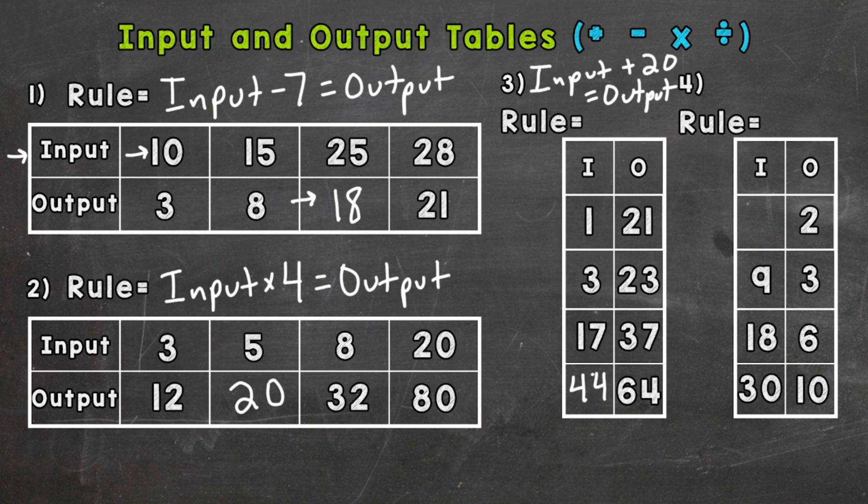And lastly, number 4: we are decreasing in value here, 9 to 3, 18 to 6, and 30 to 10. So it's either division or subtraction, and it looks like it's going to be division. How do we get 9 to equal 3? Well, we could divide by 3. 18 divided by 3 is 6, and 30 divided by 3 is 10.